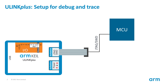The previous videos showed debug, trace, and power measurement. Nowadays, many developers use automated test stands to verify software during development. And U-Link Plus offers the ability to communicate with the target under test using digital and analog I/O signals.